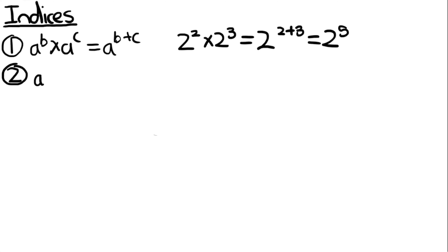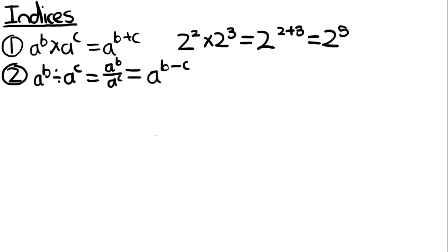The second law is very similar: A^B divided by A^C is equal to A^B over A^C, which is the same thing written as a fraction. Both of those are equal to A to the power of B minus C. The order matters here — if it were the other way around, it would be A^(C minus B). To put this into number form: 3 to the power of 3 over 3 equals 3 to the power of 3 minus 1, which equals 3 squared. Remember there is actually a 1 as the exponent on the denominator even though we don't write it.